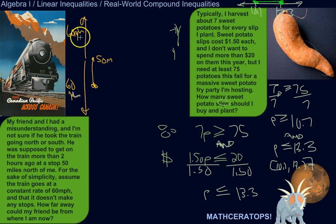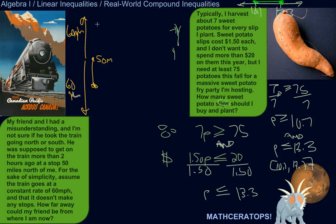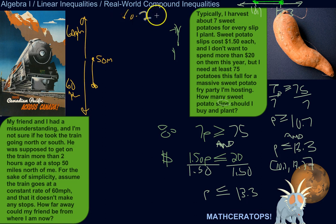He was supposed to get on the train more than two hours ago. So to translate that: if he's going 60 miles per hour for more than two hours, that's going to be greater than 120 miles.